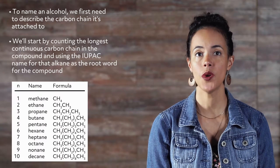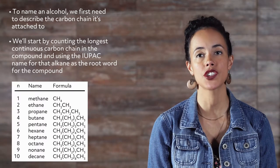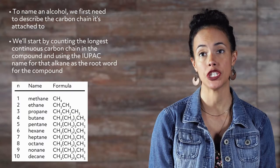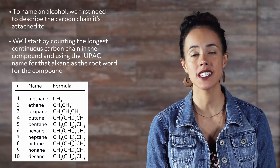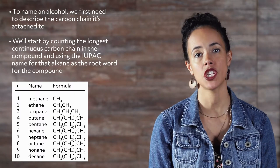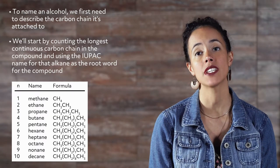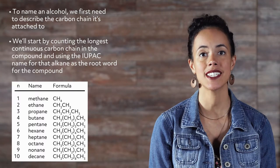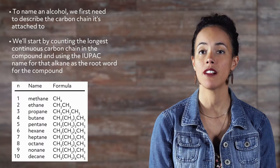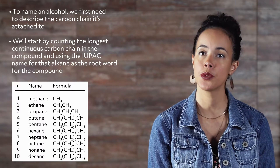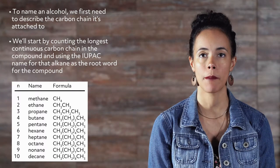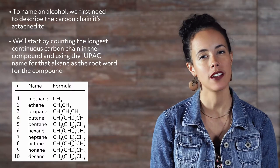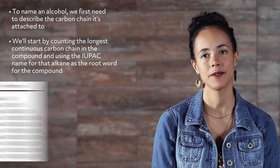To name an alcohol, we first need to describe the carbon chain it's attached to. We'll start by counting the longest continuous carbon chain in the compound and using the IUPAC name for that alkane as the root word for the compound. Here are the names for alkanes up to 10 carbons long.